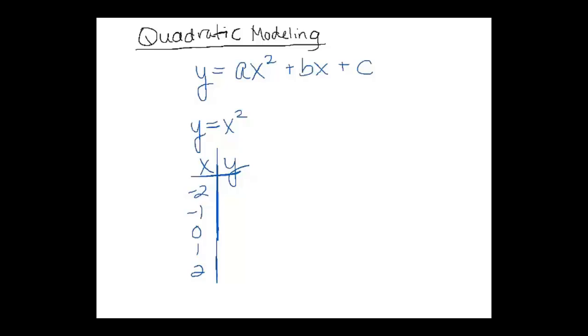So if I substitute these values in, I would get 4, 1, 0, 1, and 4. And I could make a graph. I'm going to graph those points. Just doing a quick sketch here to get an idea. And I'd get this parabola shape.